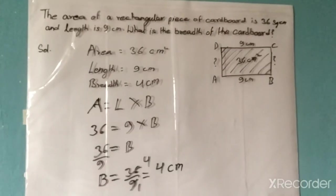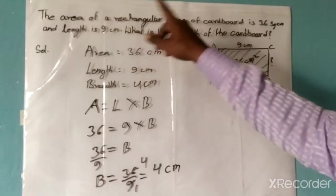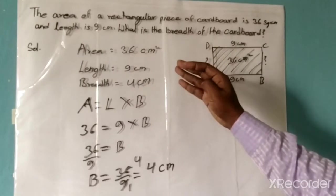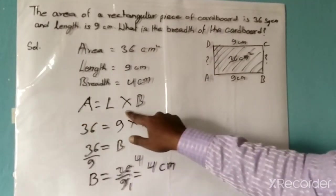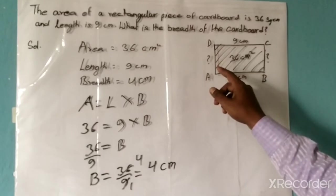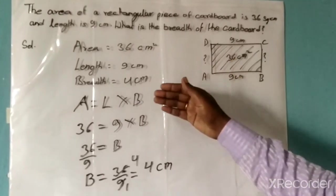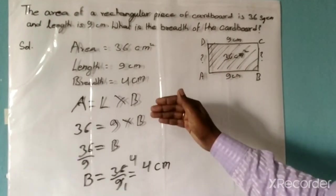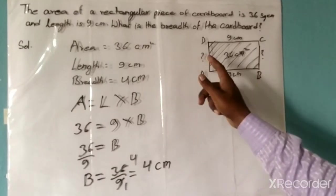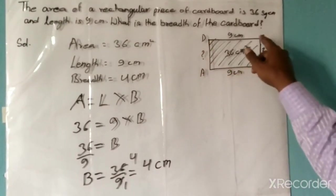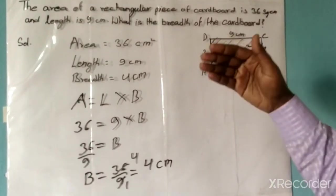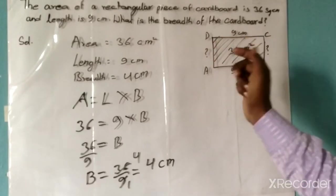So friends, I think this problem we have solved is clear. We know the formula for finding the area of a rectangle, and this formula is applied for finding out the breadth of the rectangular board. Let me revise the solution.